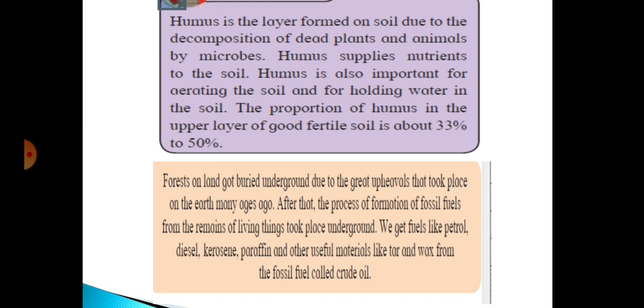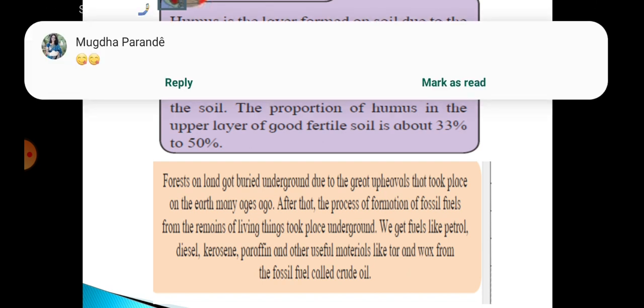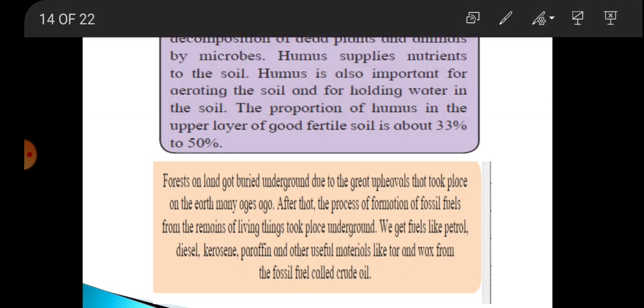So how is this humus formed? This humus is formed by the decomposition of dead plants and animals by using microbes. Humus supplies nutrients to the soil. Humus plays a very important role for aerating the soil.